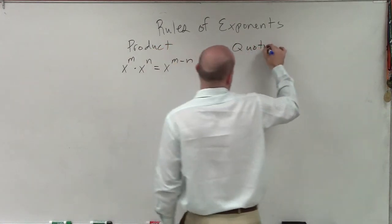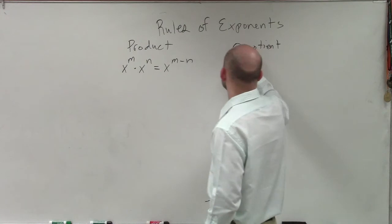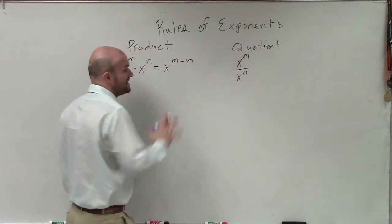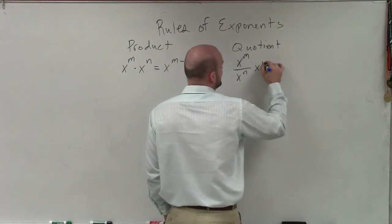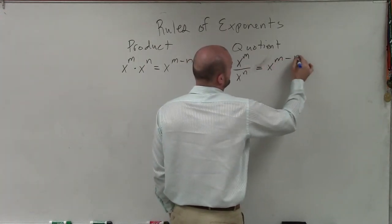Then I can deal with the quotient property. The quotient property is now going to be a division. So I have x to the m divided by x to the n. Again, the base has to be exactly the same. Then I'm just going to simply x to the m minus n.